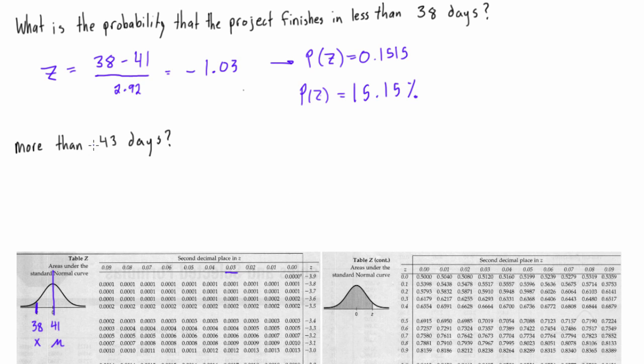Now let's look at the other example, where we're going to be more than 43 days. We will change this slightly, so our z-score now will be z is equal to 43, 43 minus 41, over our standard deviation, which was 2.92. If you punch that in your calculator, we will be getting a value of 0.6849. Let's round that to 0.68.